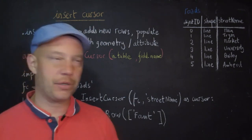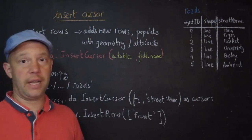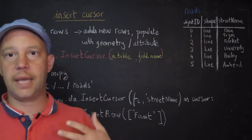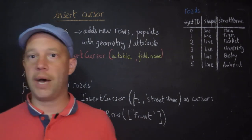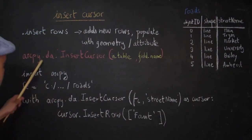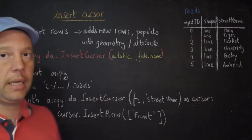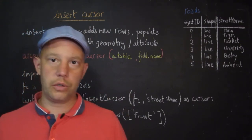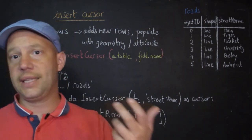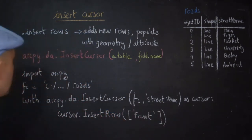The last cursor is the insert cursor. It inserts rows — essentially adding new rows to an existing table or even an empty table — and populates those rows with attributes. If it's geographic data, it will also add the geometry: points, lines, or polygons. The syntax is ArcPy.da.InsertCursor(in_table, field_names). There is no where clause here because typically you are adding to an empty or existing table without modifying a particular element.